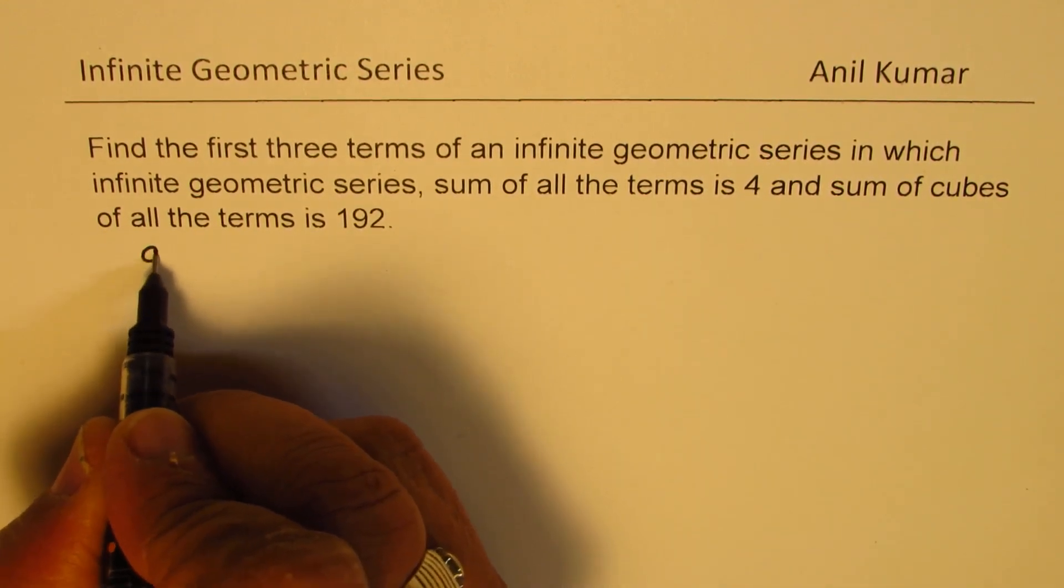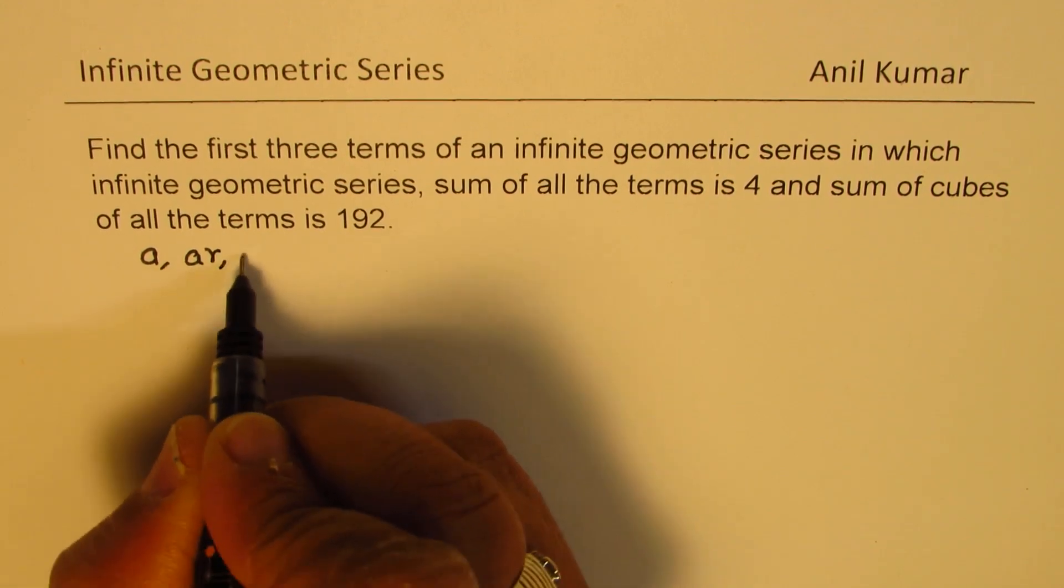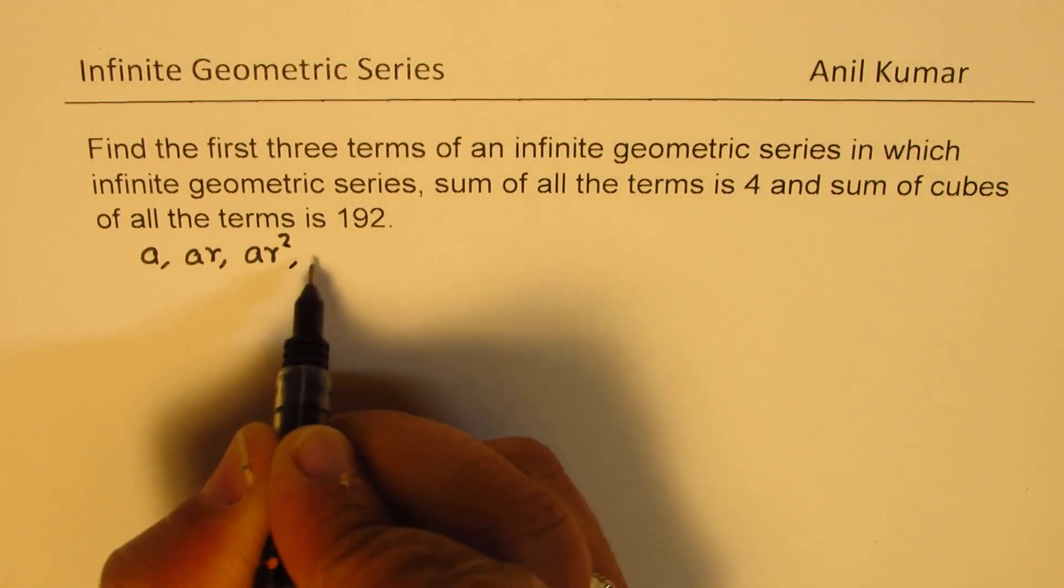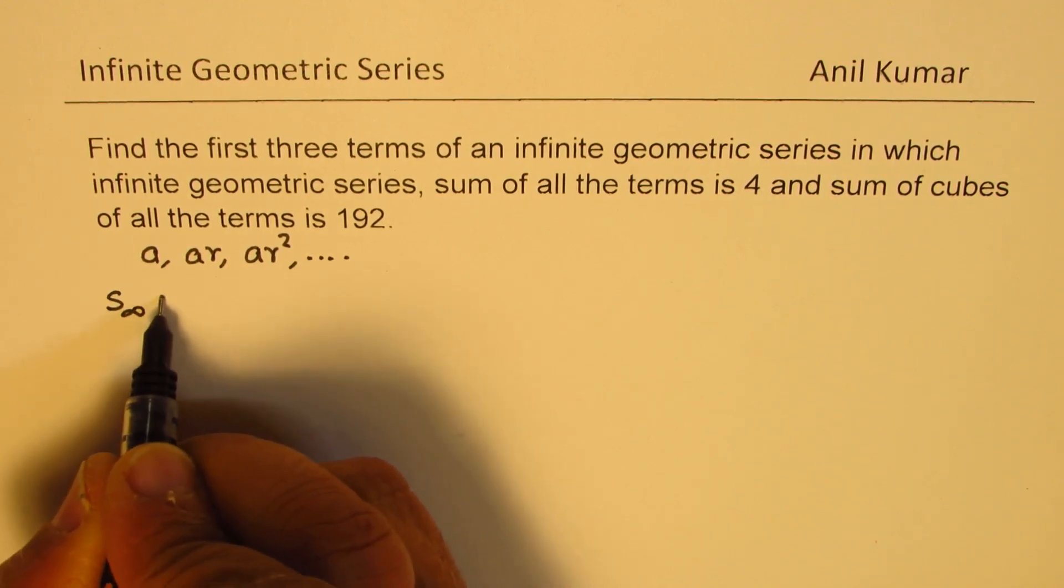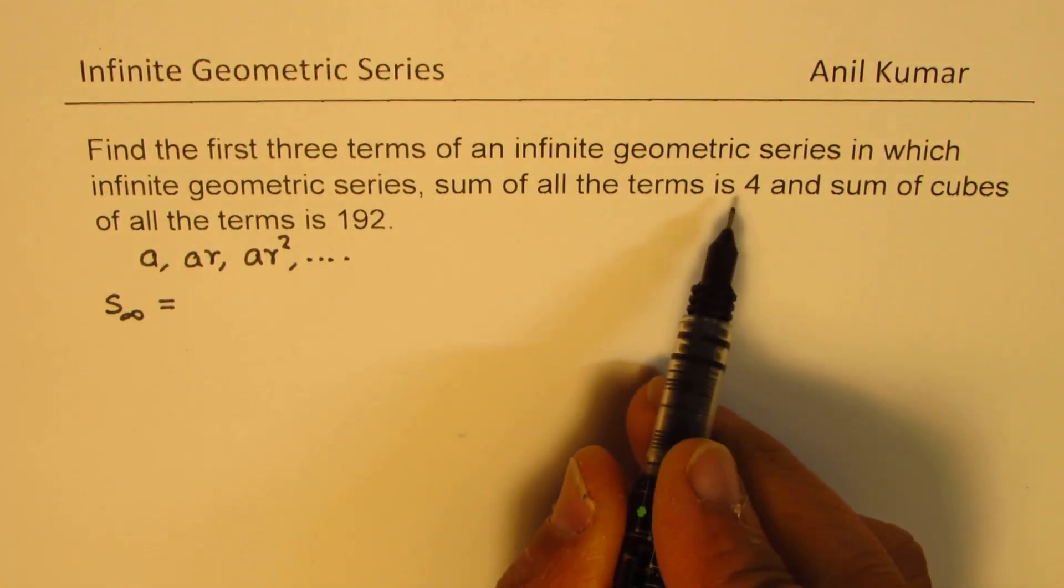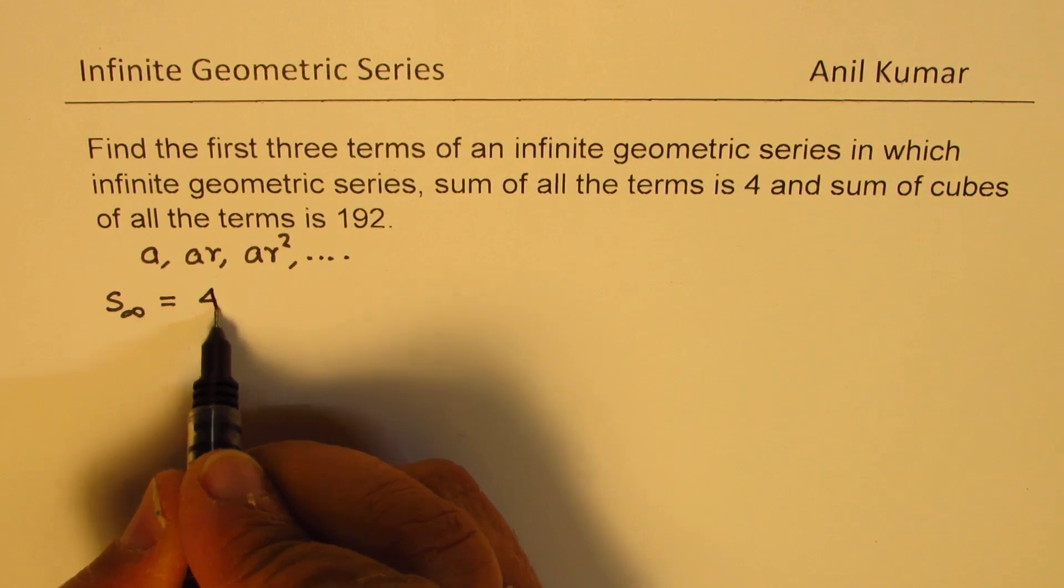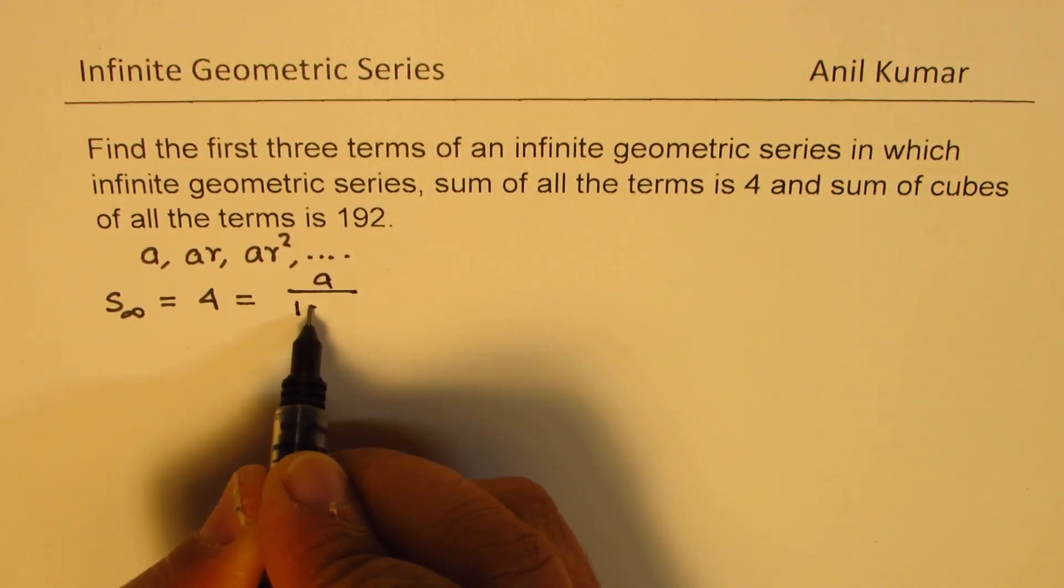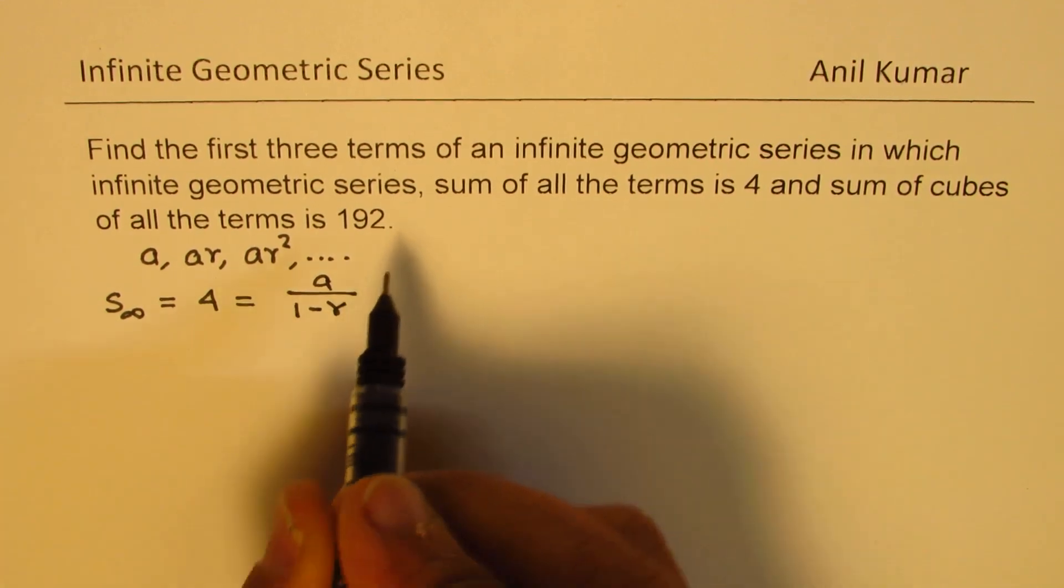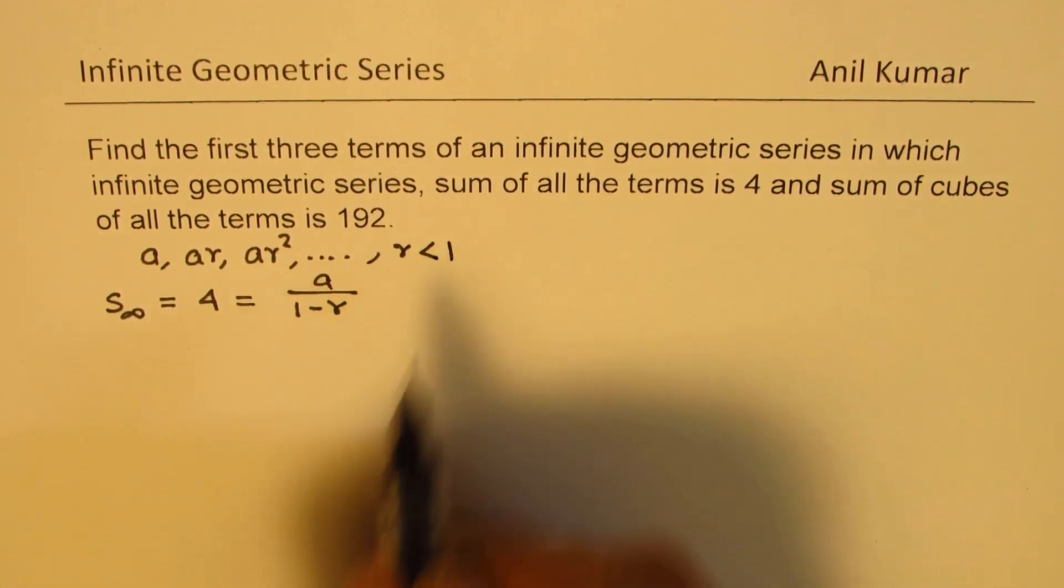What we are given here is that the series, which is geometric series, the sum of this series is equal to 4. The general formula is A over 1 minus R, when R is less than 1.